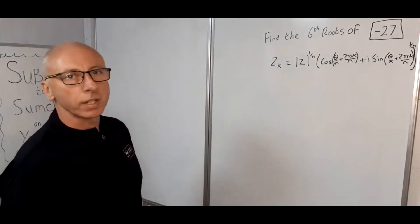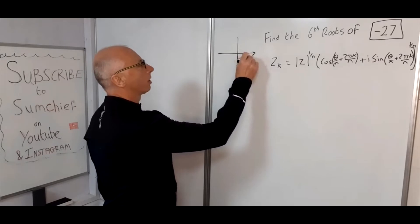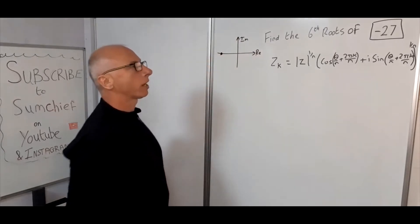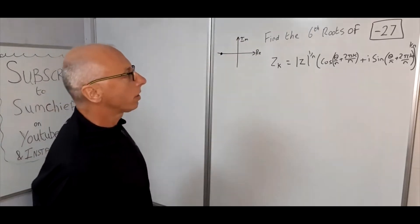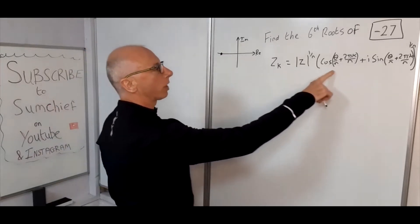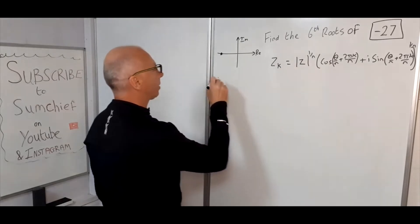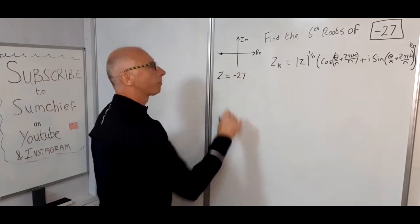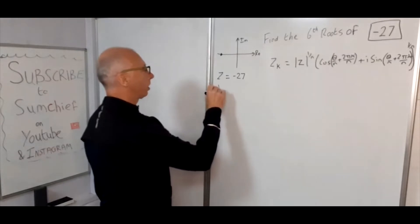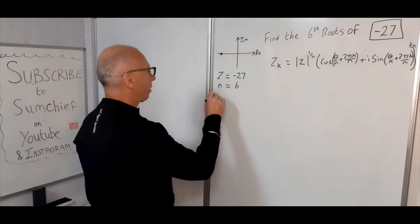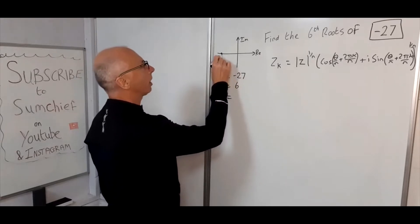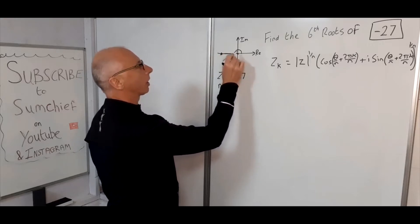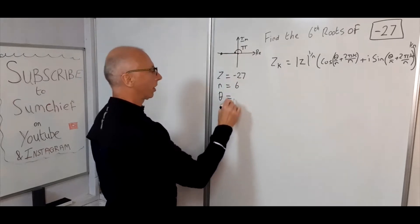Let's draw minus 27 on the diagram to see what we're dealing with. So that's the real axis, that's the imaginary axis, and minus 27 sits somewhere along the negative real axis. The angle theta is measured from the positive real axis to where our line goes out, which is simply pi. So theta equals pi.